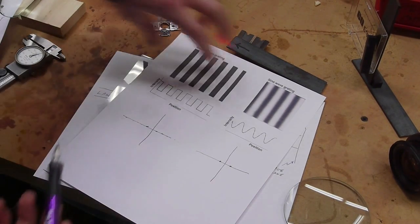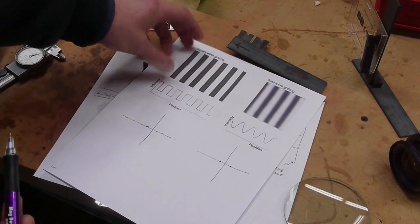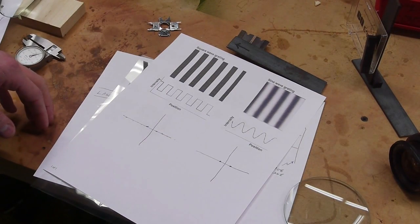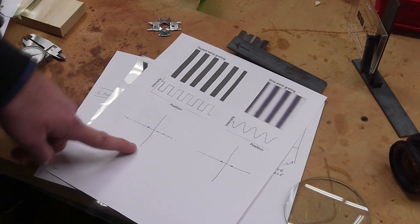This works in the other axis too. If we rotated this 90 degrees and had a square wave in the y direction, then we would just have the pattern in the y direction here.